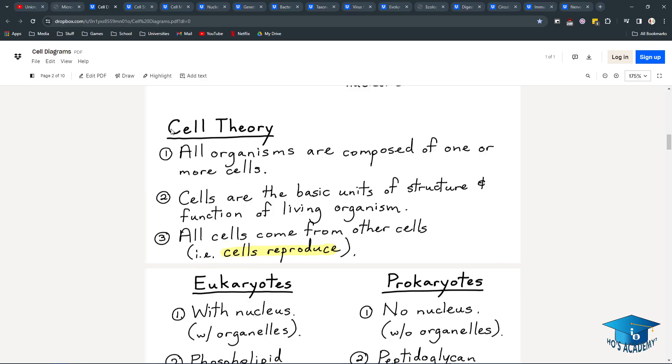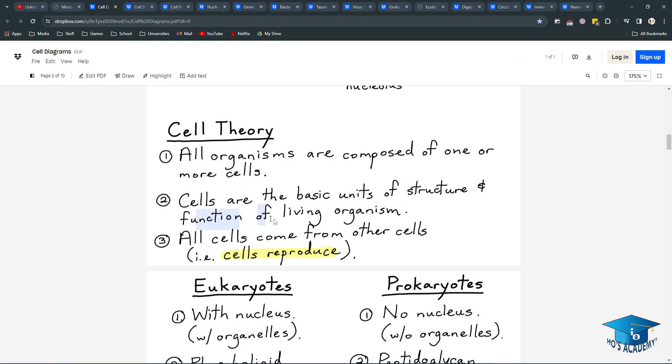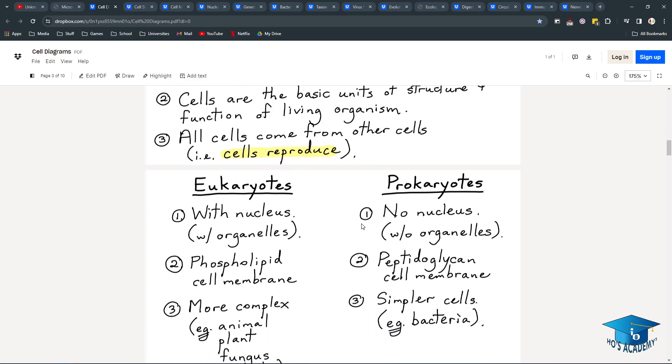So cell theory. There are three parts to cell theory. All organisms are composed of one or more cells. Cells are the basic units of structure and function of living organisms. So anywhere from bacteria to humans, they're all composed of cells. And all cells must come from other cells. So cells reproduce. This means your cell can't spontaneously come from nothing.